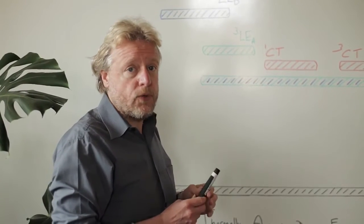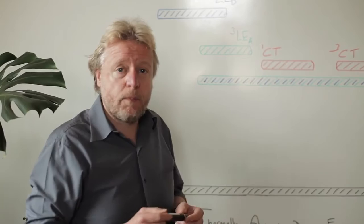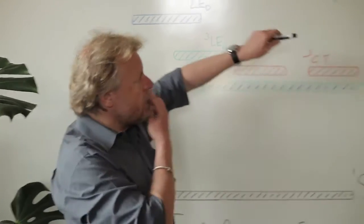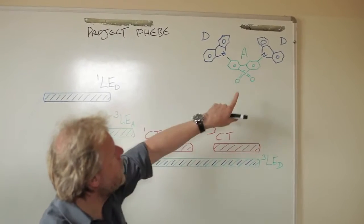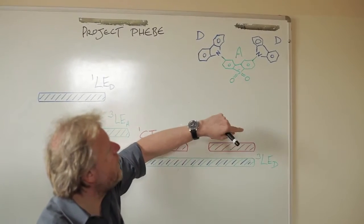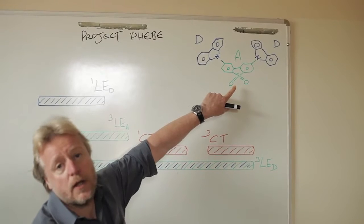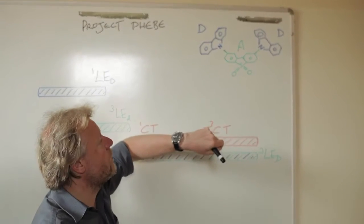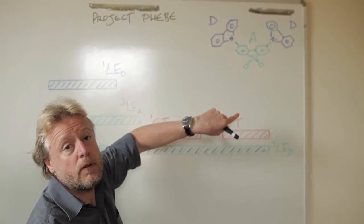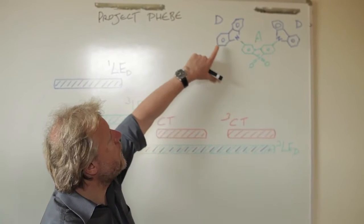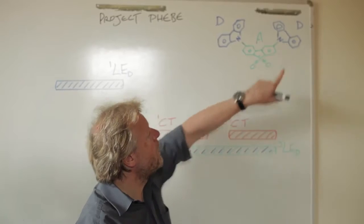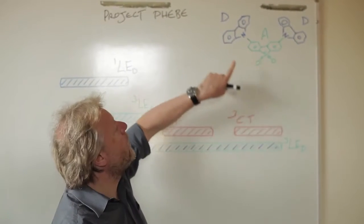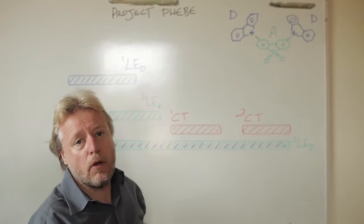The type of molecules that we're using have a very special property. They contain a donor element which wants to kick electrons into an acceptor part of the molecule which wants to take those electrons. And the molecules that we've started looking at have a donor connected to an acceptor and another donor. So it's symmetric and we call them DAD molecules.